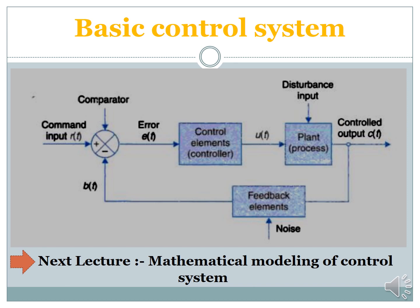On the basis of the discussion so far, the basic block diagram of a closed loop system is shown in the figure. The components include a plant, which is the process under control, a controller, and a feedback path. The reference input — the command input — is compared with the feedback signal. The error signal generates the control signal, which drives the plant to produce the desired output. This is the basic block diagram of a closed loop control system. The next lecture will cover the mathematical modeling of control systems. Thank you.